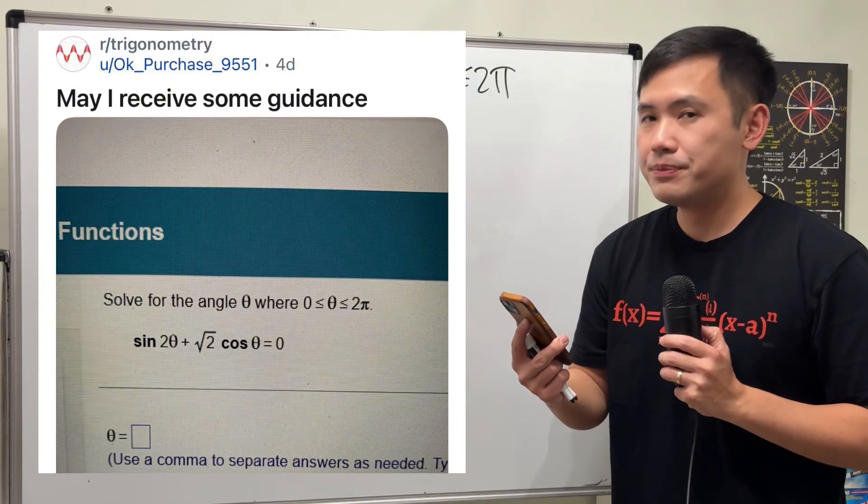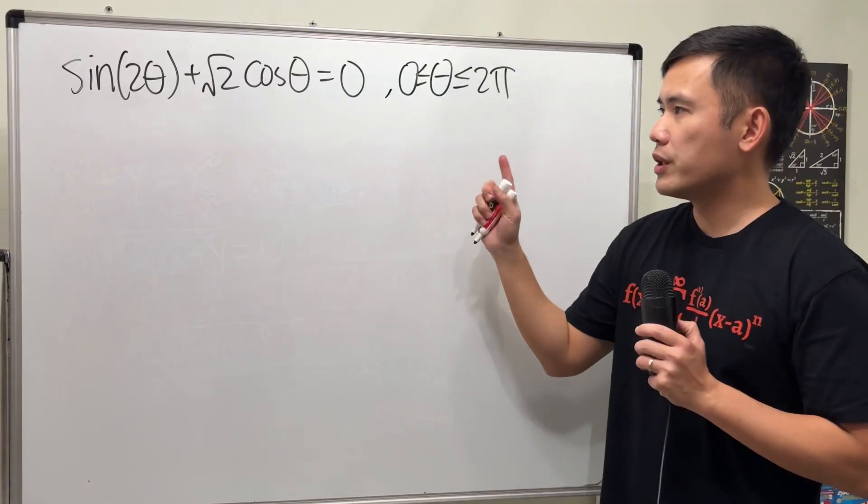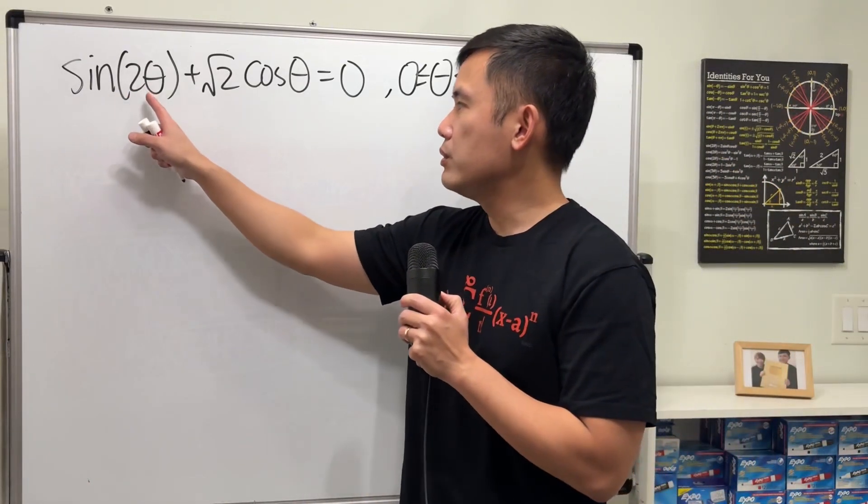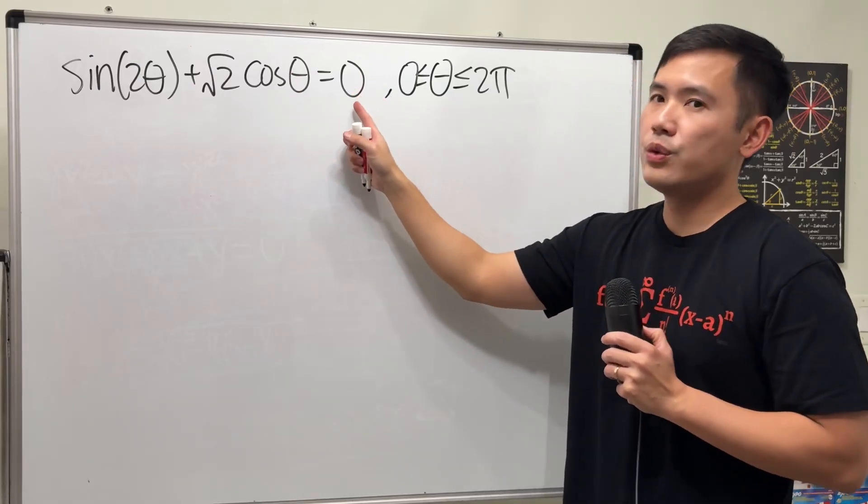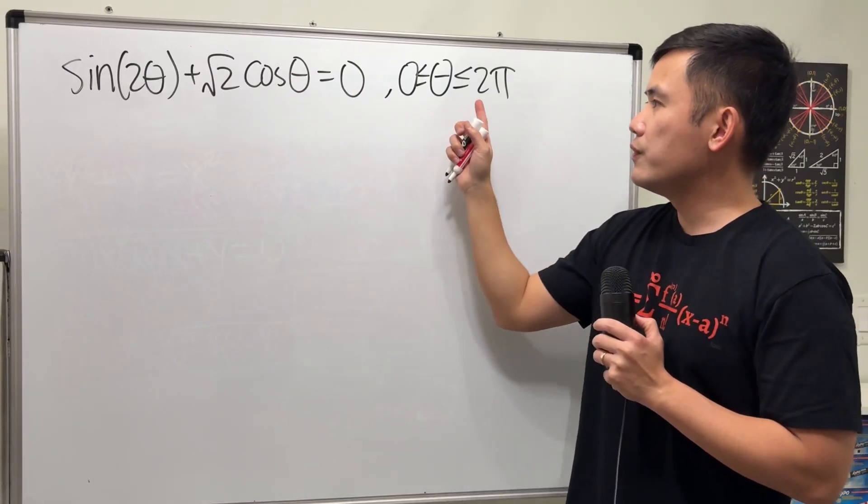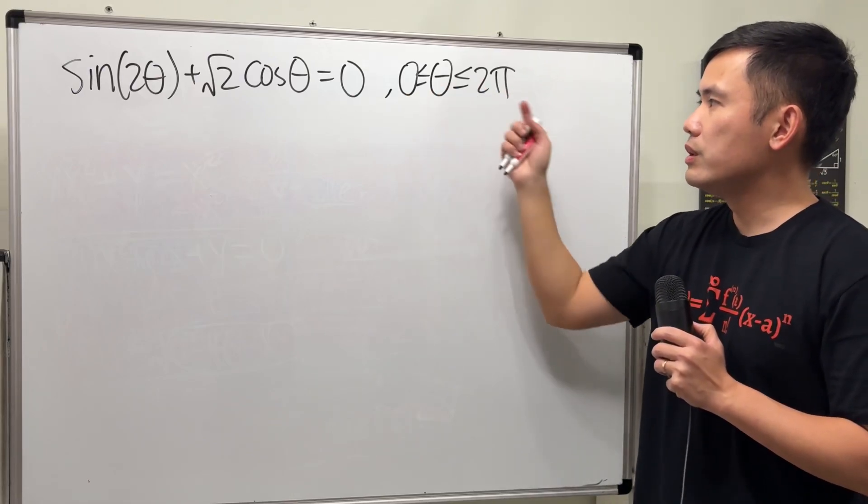May I receive some guidance? Sure, let's have a look. Right here we are going to solve this trigonometric equation. We have sine of 2 theta plus square root of 2 times cosine theta and that is equal to 0. We are solving for when theta is in between 0 and 2 pi including the end points.